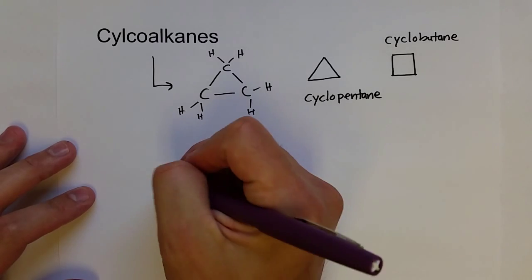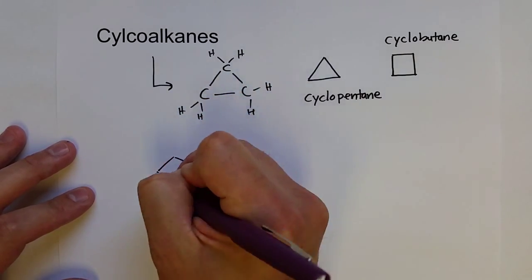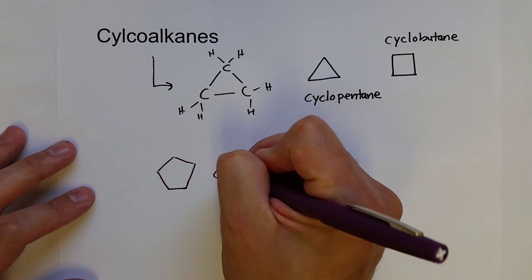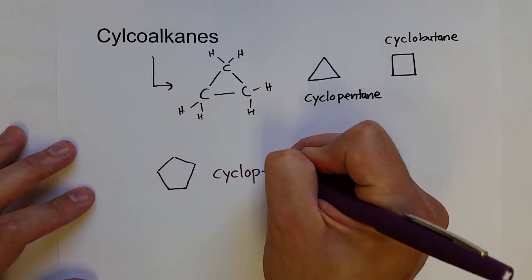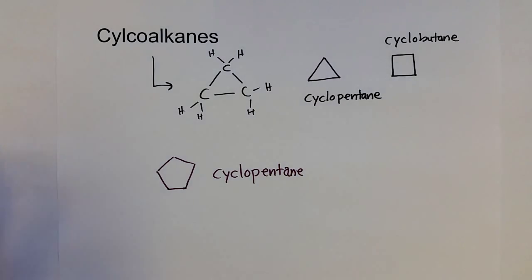So a five-carbon ring would look like this, and of course, that would be cyclopentane. And there are five carbon ring structures all around, very useful and very common.